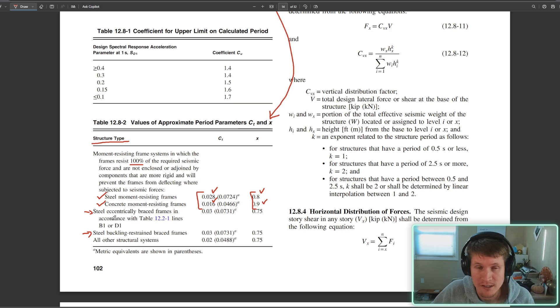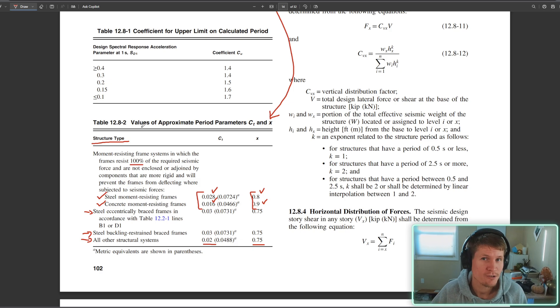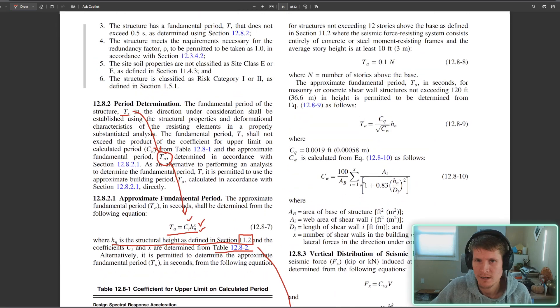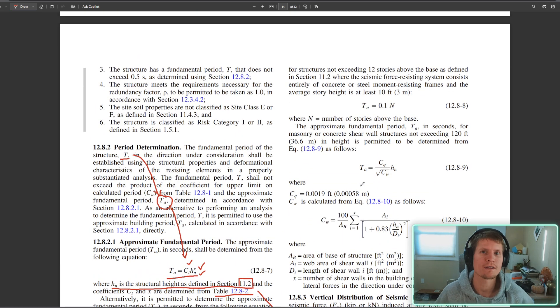Every other vertical lateral system gets lumped into other criteria, which is our last option here: all other structural systems with information or values provided. We'll take those for our non-moment frame system. So that was building one with the concrete shear walls, and we'll use that criteria. You can use all this information and I believe you can get to a final answer for this question.